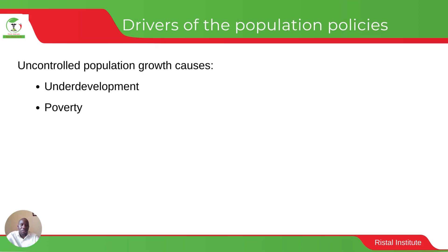Earlier there were many agencies advocating for population control policies to ensure there was no population explosion. The belief was that if there was uncontrolled population growth, underdevelopment would occur. UN agencies and other partners tried to make sure that developing countries had policies in place to control population growth, with the major argument being that a population explosion would lead to underdevelopment and poverty.